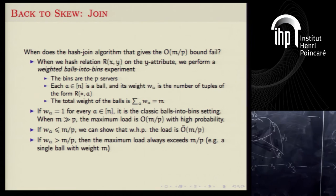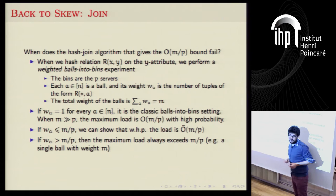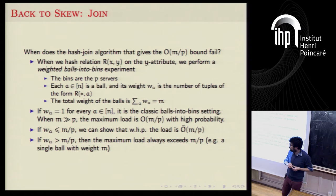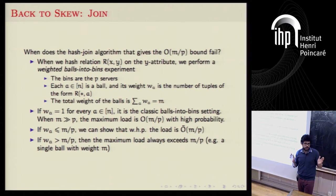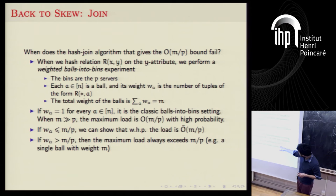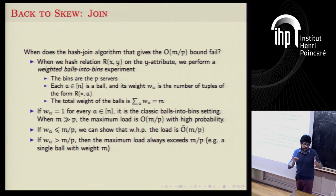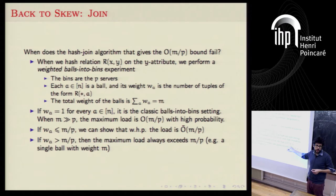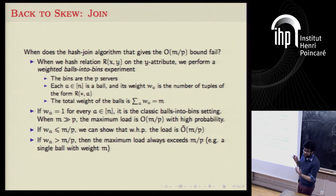This is the weighted balls-into-bins problem. If m is much bigger than P — say P-squared or more — the maximum load is m/P with high probability. If m equals P, we get the classic result that maximum load is O(log n / log log n). When the weight of each ball is at most m/P, the load will be O-tilde of m/P (hiding some polylogarithmic factors). So if no value appears more than m/P times, we're essentially optimal.